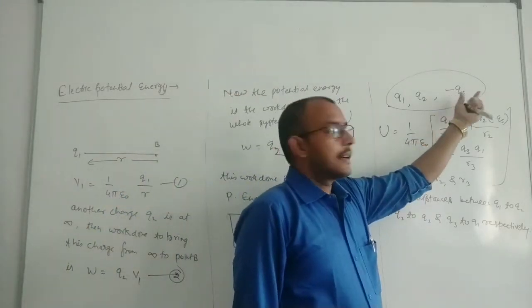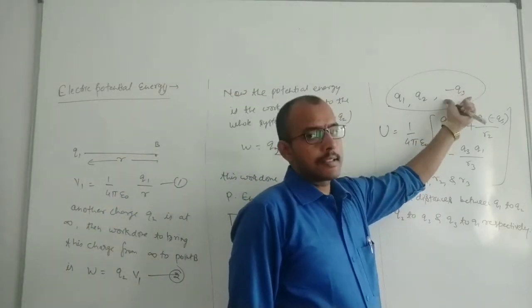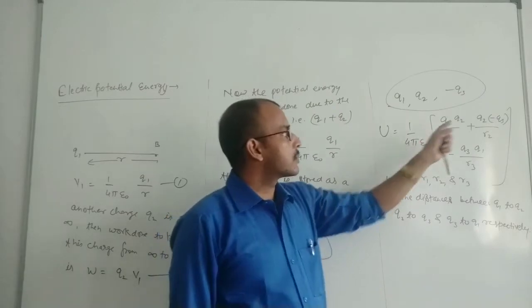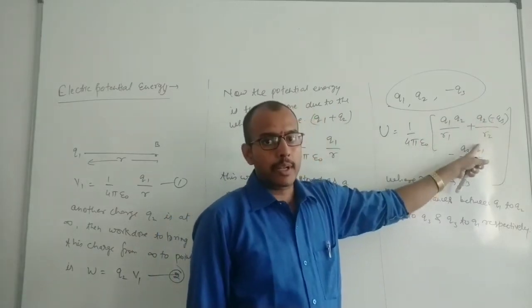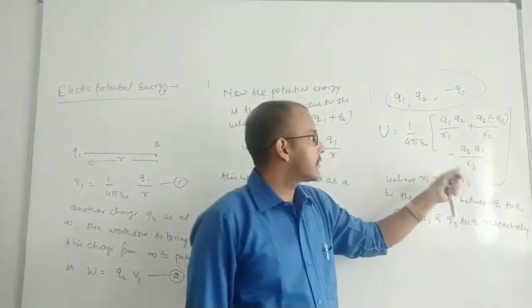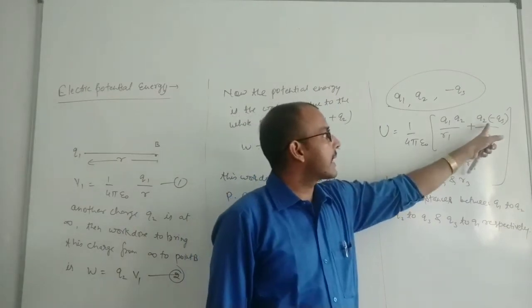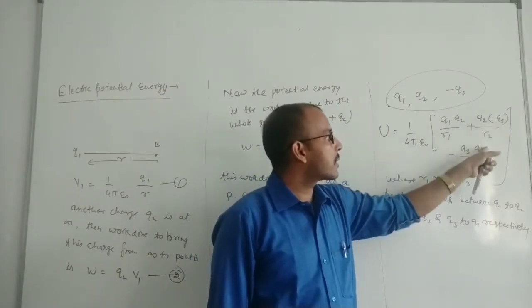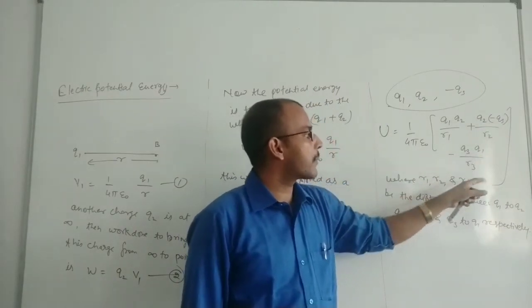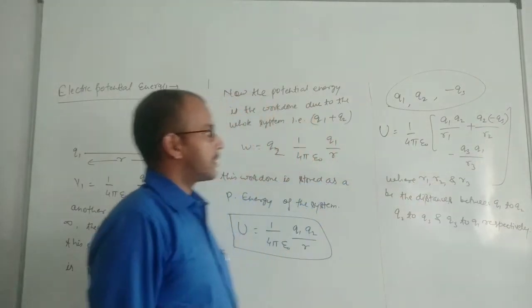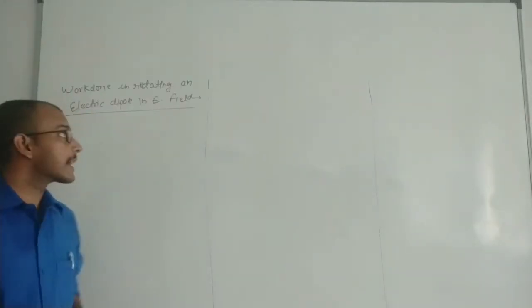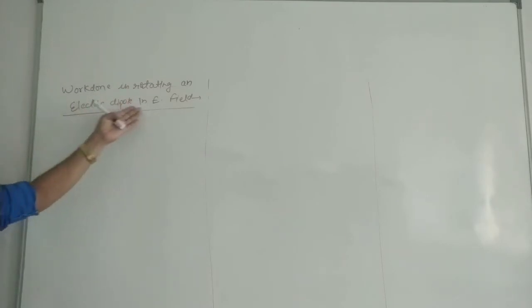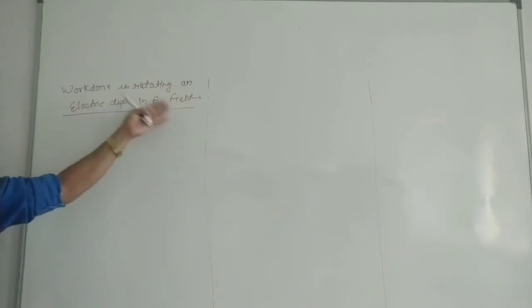If we have a negative charge, we need to put the negative sign with Q2 Q3 upon R2 and minus Q3 Q1 upon R3. Now our next topic is work done in rotating an electric dipole in an electric field.